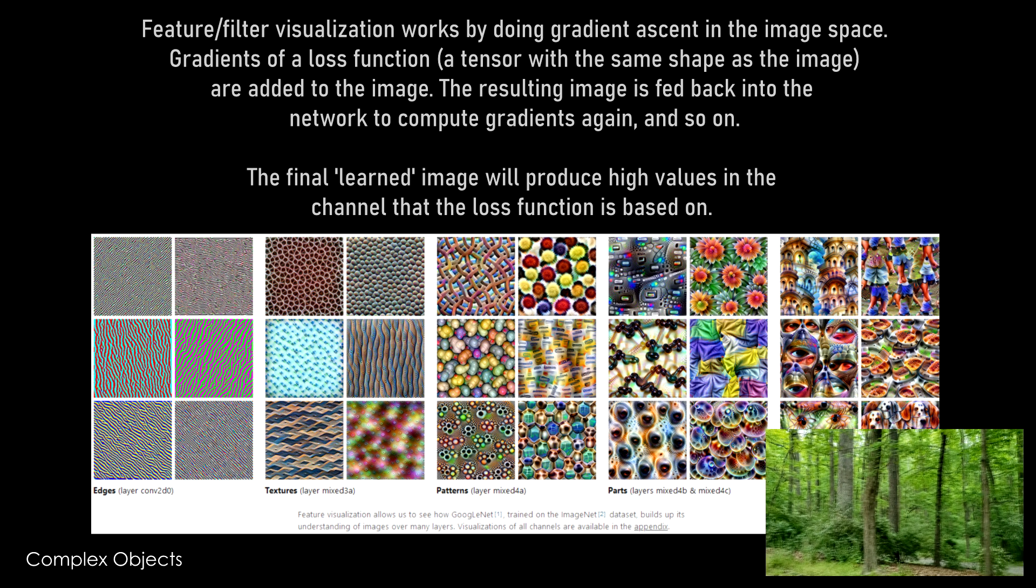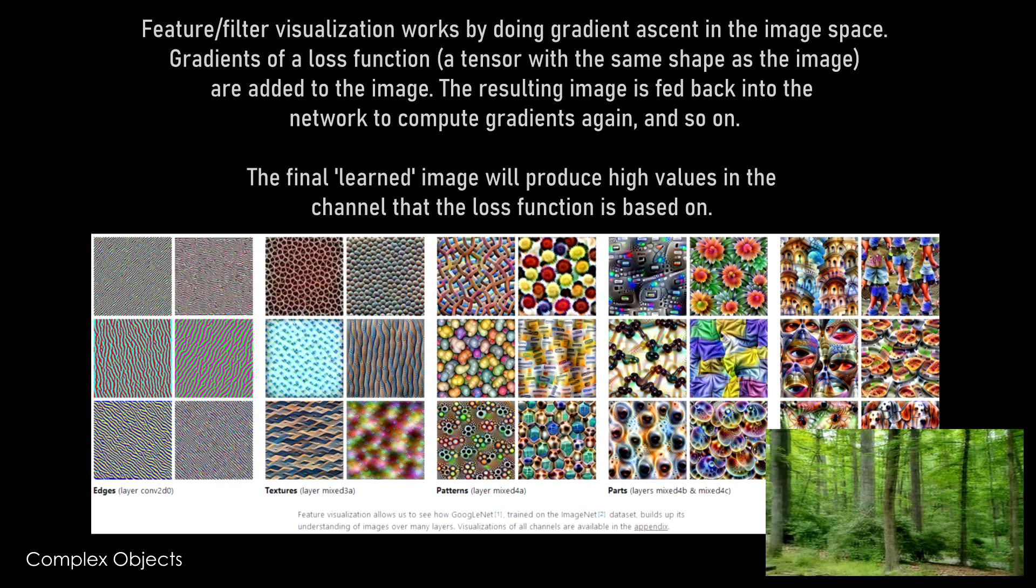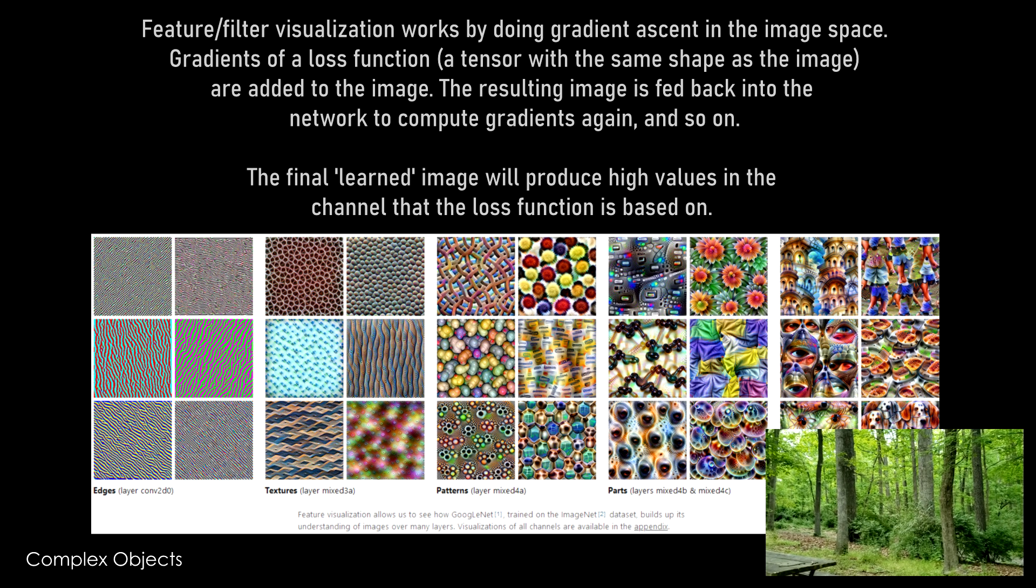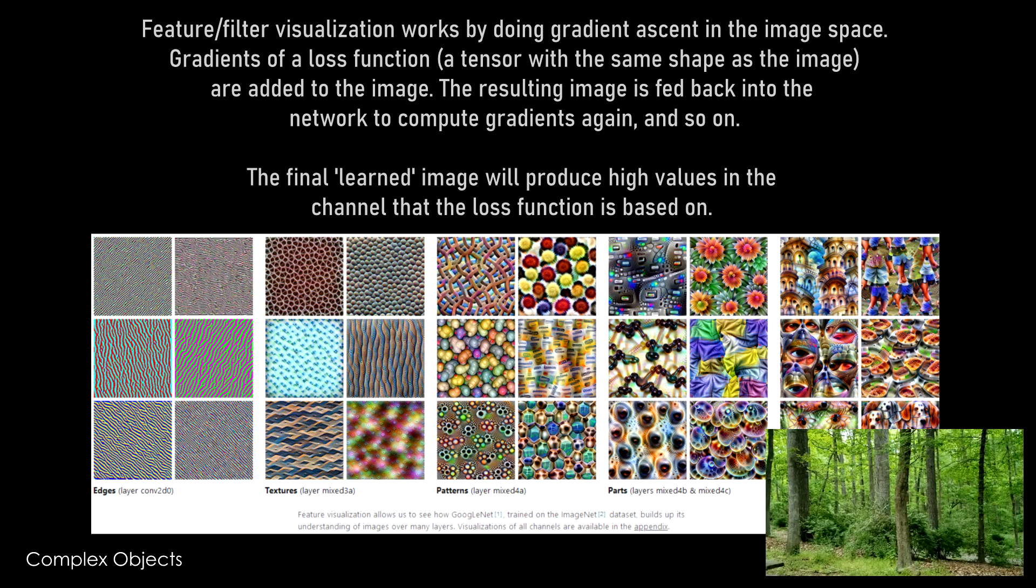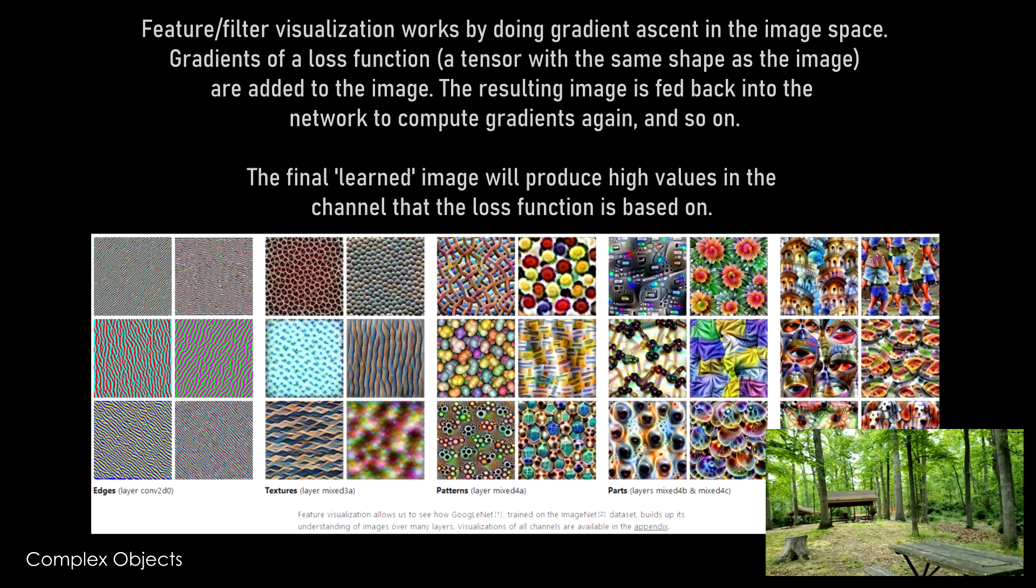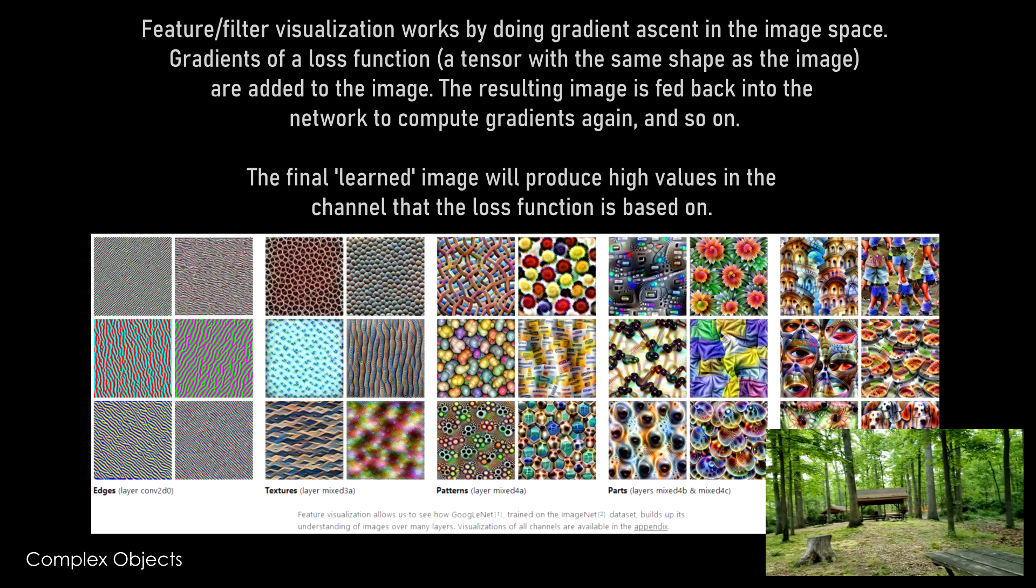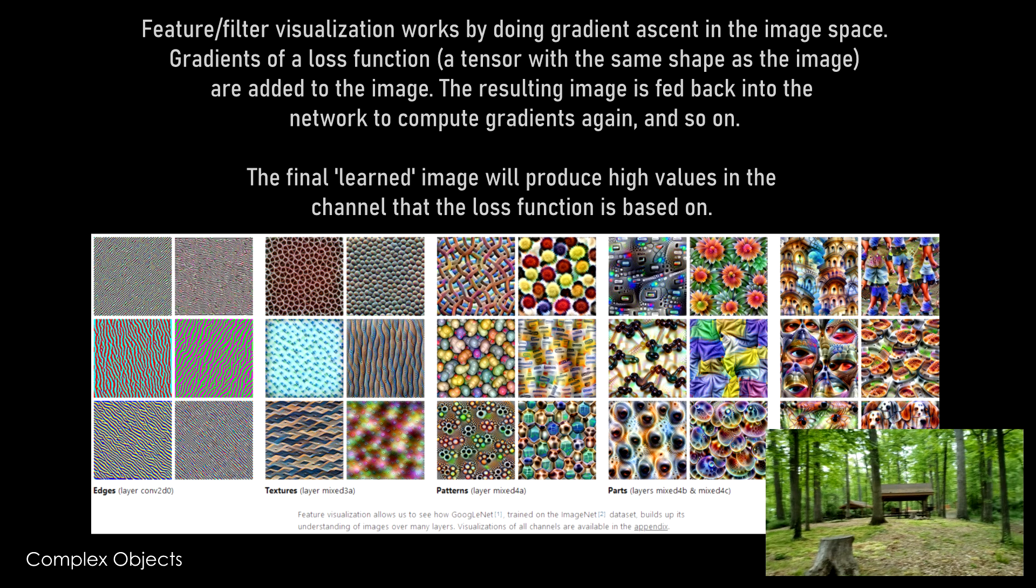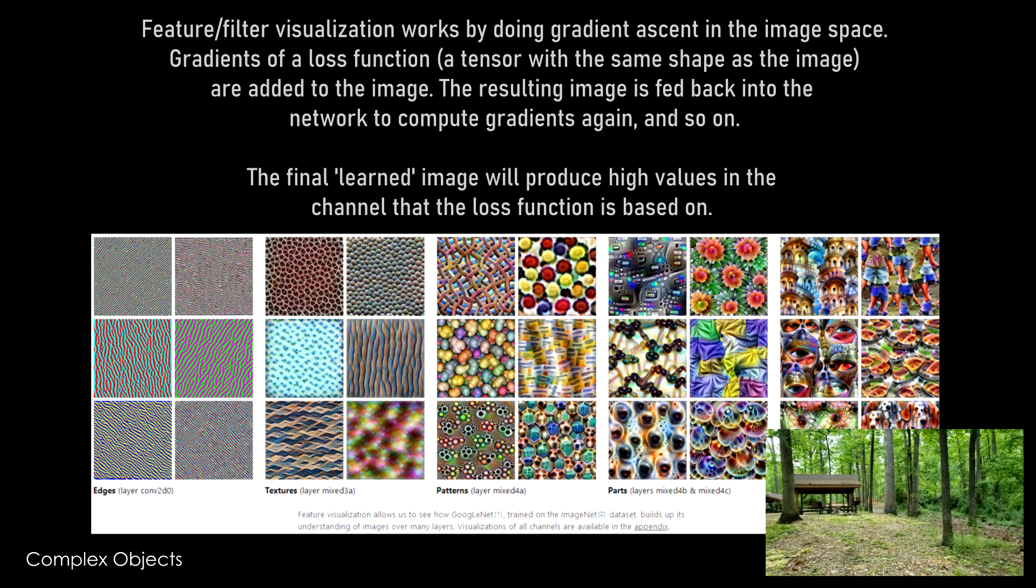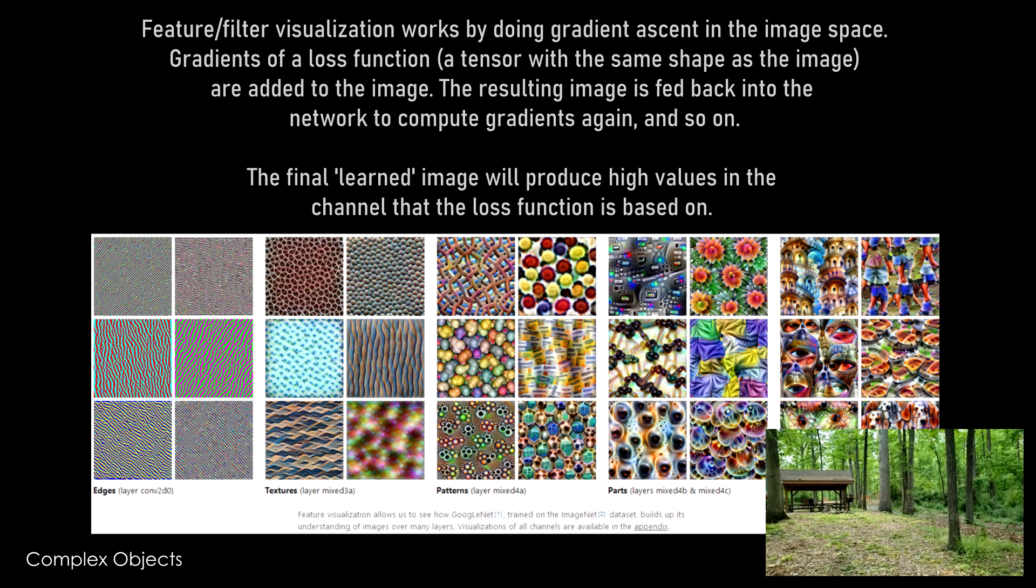And then you basically you add that gradient block to the image and then you repeat the process where you send that new input with the slightly adjusted pixels back through the network and then you compute another gradient and apply it to that image again. So it's just a cyclic process of adjusting this image based on how strongly it activates a channel in the network. That's for feature visualization or the filter visualization.